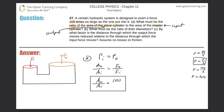Now for part (b): what must be the ratio of their diameters? Starting from A_out / A_in = 100, I expand the areas using the formula for a circle: pi r squared. So (pi × r_out²) / (pi × r_in²) = 100. The pi's cancel, leaving r_out² / r_in² = 100.